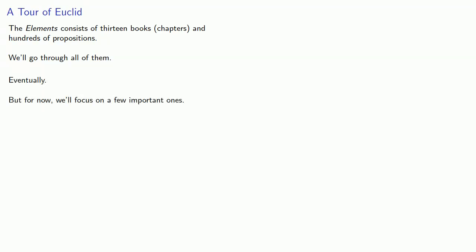The elements of Euclid consist of thirteen books, we'd call them chapters, and hundreds of propositions. We'll go through all of them eventually, but for now we'll focus on a few of the important ones.